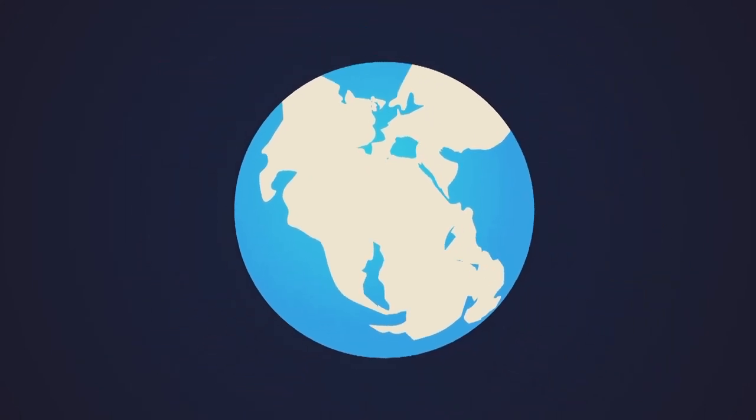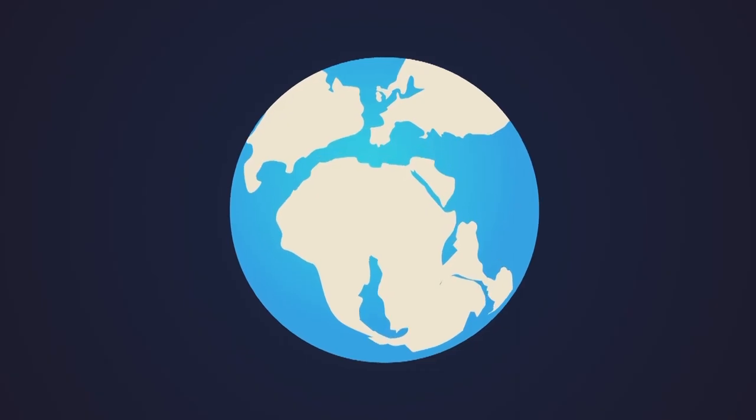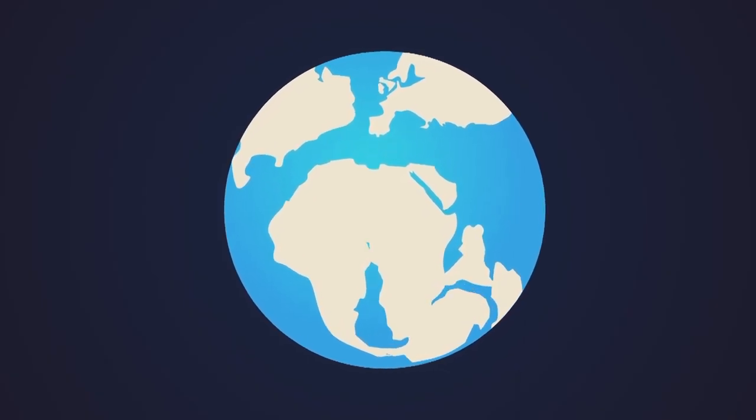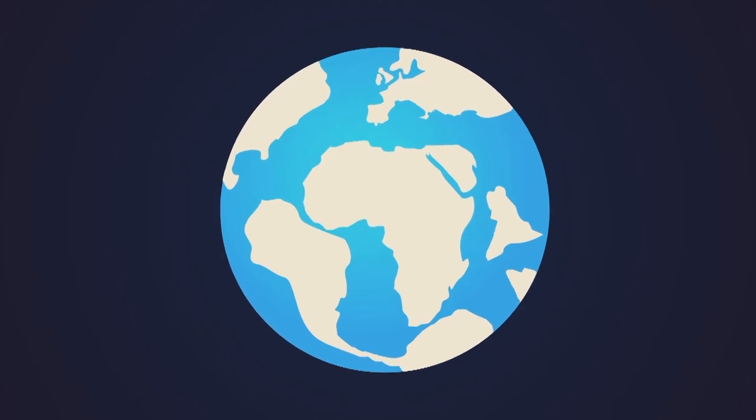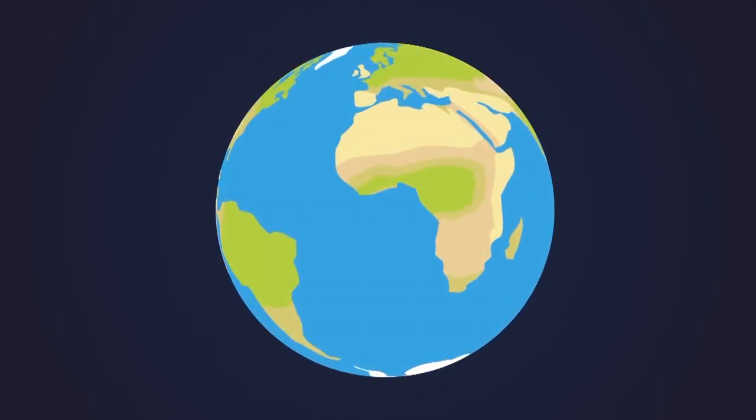But the Earth's crust is still restless. Pangaea breaks apart and its pieces float away on top of the Earth's mantle. Slowly they turn into the continents we live on now.